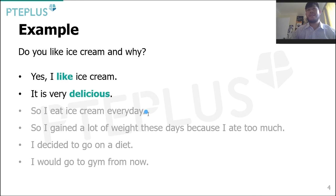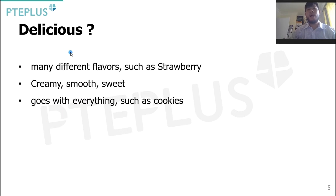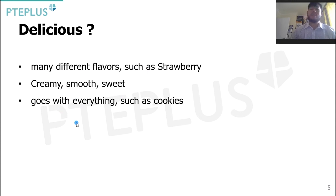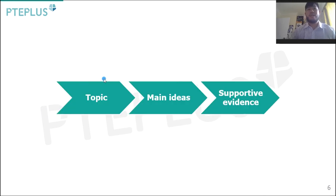It's these two: 'Yes, I like ice cream. It is very delicious.' Here, I'm able to answer the first part of the question — 'Do you like ice cream?' — so that's the major aspect. And 'why' would be a minor aspect, answered by 'It is very delicious.' From there, we can go into more details like there are many different flavors such as strawberry, it's creamy, it's smooth, it's sweet, it goes well with everything such as cookies. So you can see we follow the structure of topic, main idea, and supportive evidence.